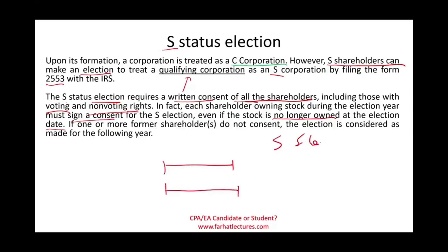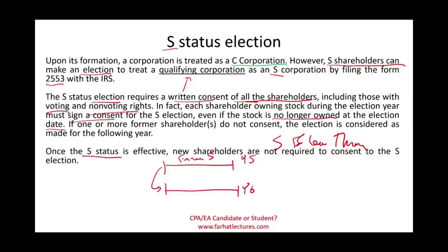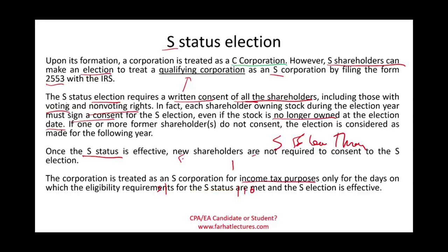Once an S corporation has its status, new shareholders coming in have no say — they must accept the existing S election. The corporation is treated as an S corporation for income tax purposes only for the days on which the eligibility requirements are met and the election is effective.